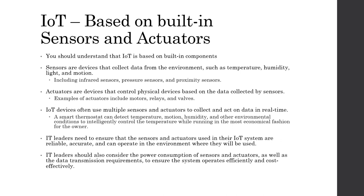Actuators are controllers. A sensor is detecting — think of it as input. Actuators are like an output device: they control a physical device. They might open or close a lock, open or close a garage door, raise the temperature in a room, turn lights on or off, or turn water on or off in the case of a yard sprinkler system. A lot of IoT devices have multiple sensors and multiple actuators, and they collect and act on data in real time.